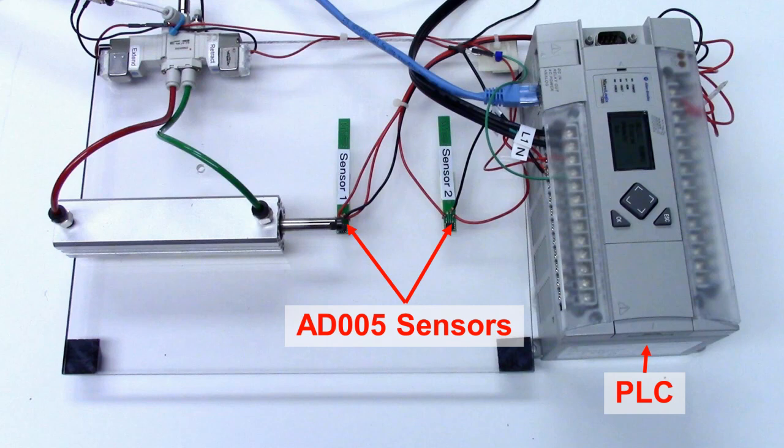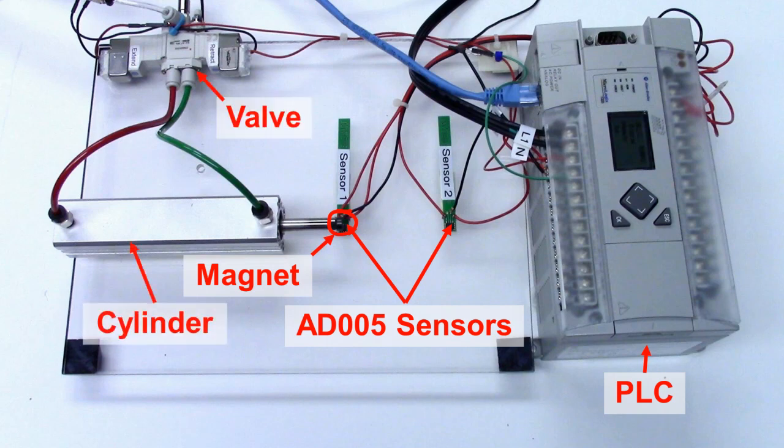The two sensors set the two travel limits. There's a disc magnet on the piston. We have a pneumatic cylinder, a 3 position 5 port directional control valve with exhaust center. With a 3 position valve we can extend, reverse, or stop the cylinder.